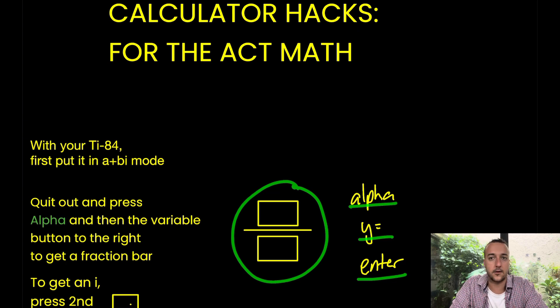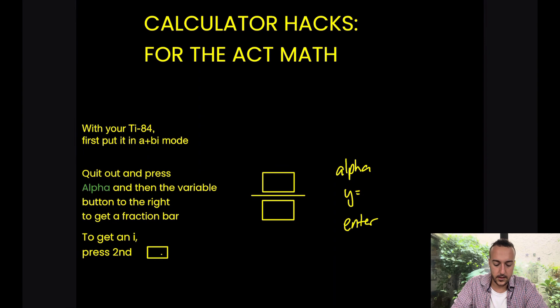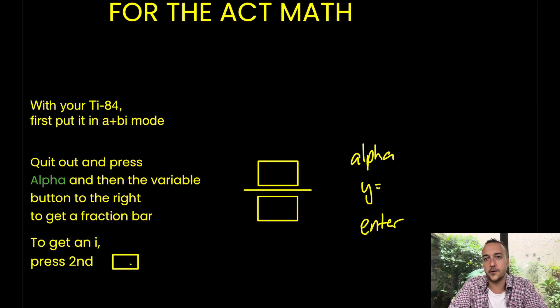Really, anytime you're dividing anything, quadratic formula or anything, helps a ton. From there, the next step that you're going to need is this piece right here. Really, how do you get an i? Where is i on your calculator?